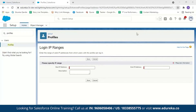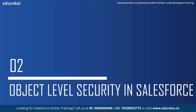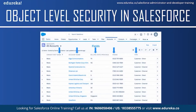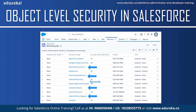That was organization level security. Now let's move on to object level security. Before getting into the next three types of security, it's important to understand objects, fields, and records. Objects in Salesforce are like leads, contacts, opportunities, or any other custom objects. Fields are the columns in the tables, and records are the rows or entries in the table.